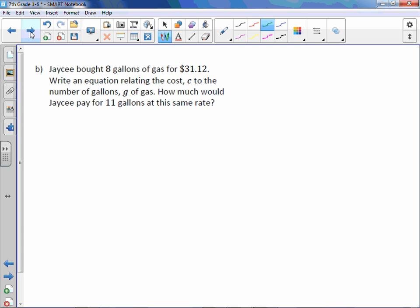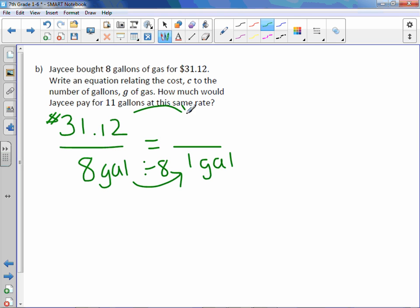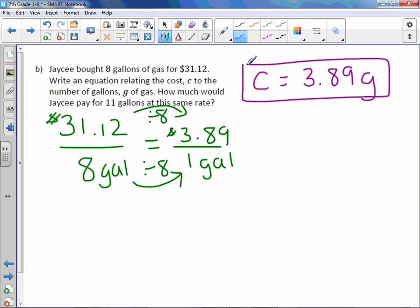JC bought eight gallons of gas for $31.12. Write an equation relating the cost, C, to the number of gallons, G, of gas. How much would JC pay for 11 gallons at this same rate? So again, we're finding an equation with the unit rate. So let's find the unit rate. $31.12 divided by eight gallons of gas. We want the unit rate, which means we need one gallon in the denominator. Divide by eight to get there. And do the same on the top. And $31.12 divided by eight is $3.89. So our equation would be the cost equals $3.89 per gallon or times gallon. So that's our equation.